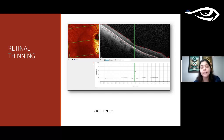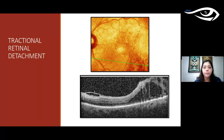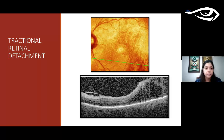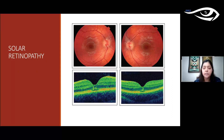OCT can also show thinned retinas — in retinitis pigmentosa the central retinal thickness may be as low as 139 microns. In proliferative diabetic retinopathy with tractional detachment, macular OCT can show extension of the tractional detachment to the fovea, helping decisions for surgery. In solar retinopathy from looking at solar eclipses, OCT shows otherwise normal retinal layers with a specific defect in the photoreceptor layer just below the fovea, resulting in reduced visual acuity.